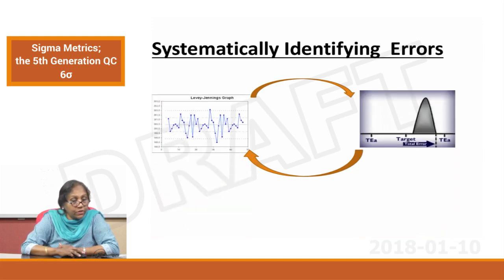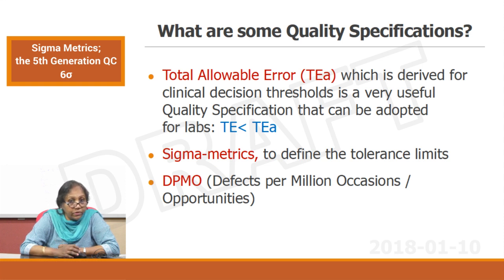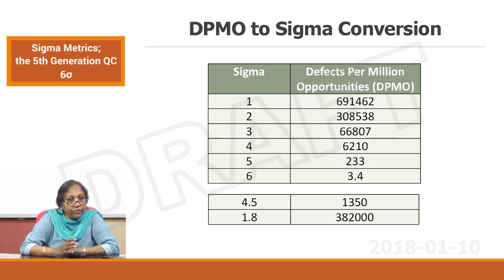We already talked and saw this slide many times — you have got your LJ charts, you have got your bias detection mechanism, you can take it together and understand your total error. Back to what are some quality specifications: total allowable error — you have set your goal as TE will be less than TEA. Second, sigma matrix can also be used to define the tolerance limits. DPMO is defects per million occasions or opportunities.